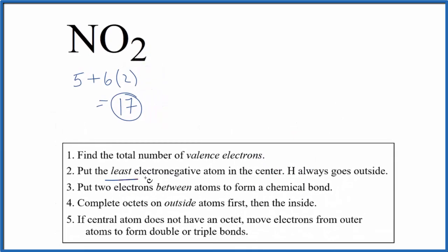So we put the least electronegative atom at the center of our Lewis structure. That's going to be the nitrogen. The oxygens go on either side.